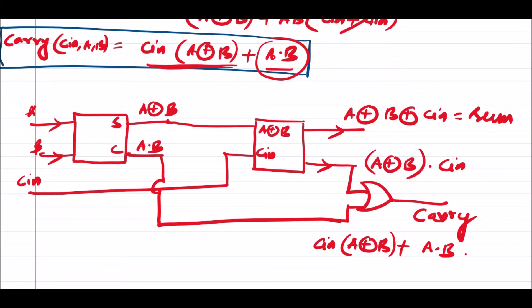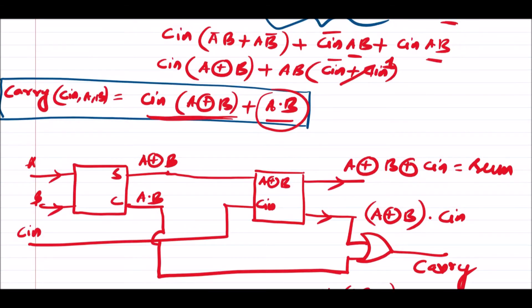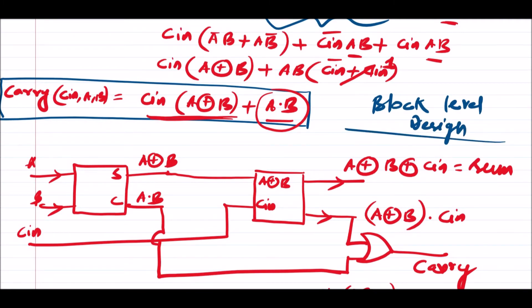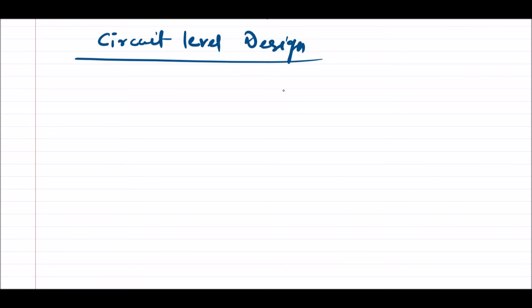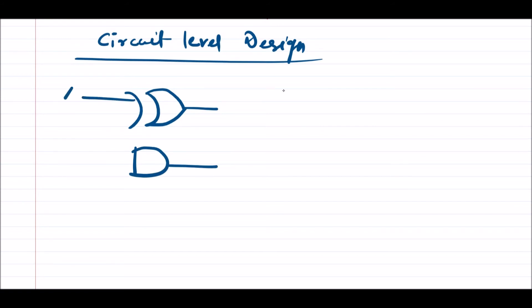This is the block-level design of the full adder using two half adders. Now let us draw the circuit-level design. For the circuit-level design, the first half adder consists of one XOR gate and one AND gate with inputs A and B. The outputs are S0 (sum) and C0 (carry).